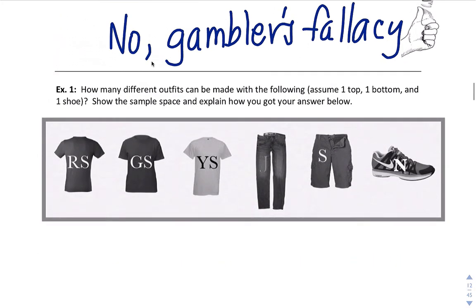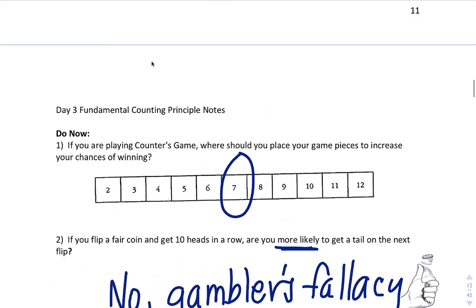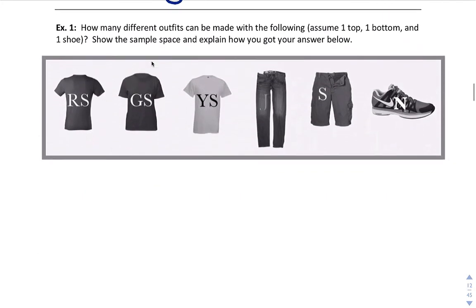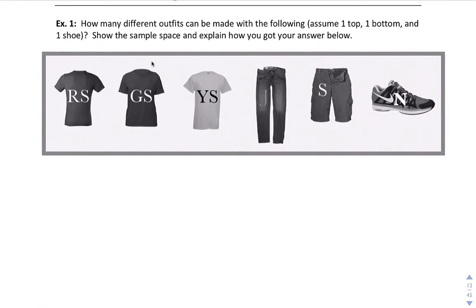Let's take a look at some examples today. We're looking at the Fundamental Counting Principle. First one: How many different outfits can be made with the following? Assume you have one top, one bottom, and one shoe. Show the sample space and explain how you got your answer below.